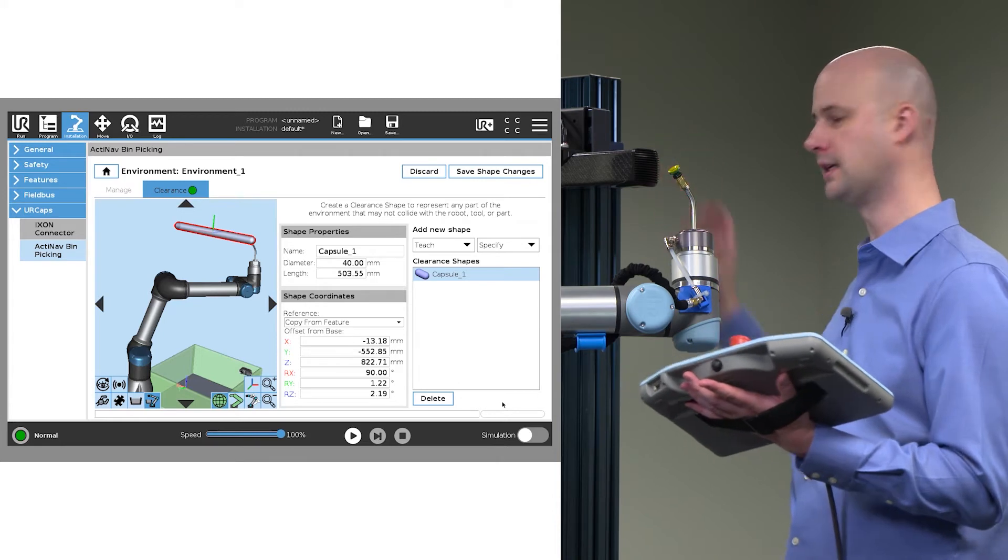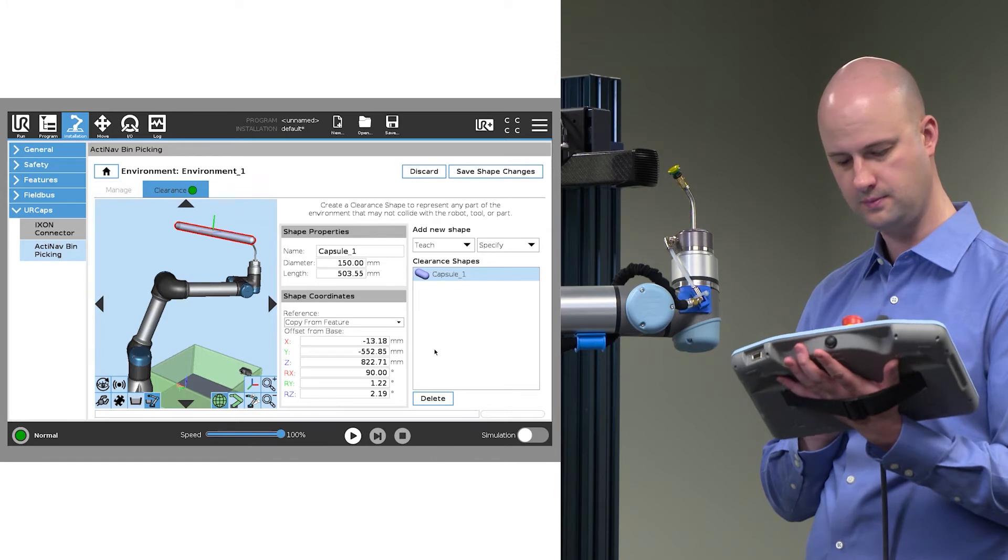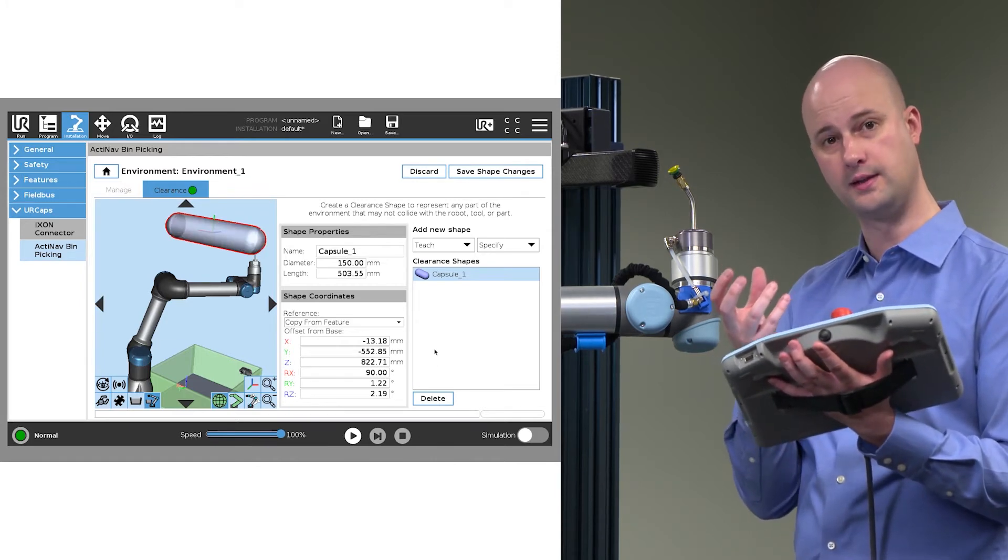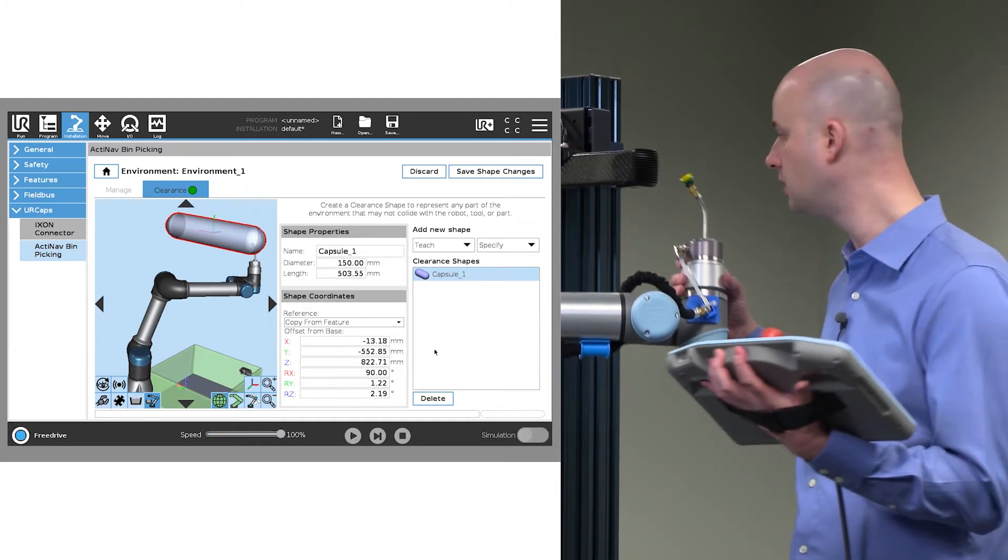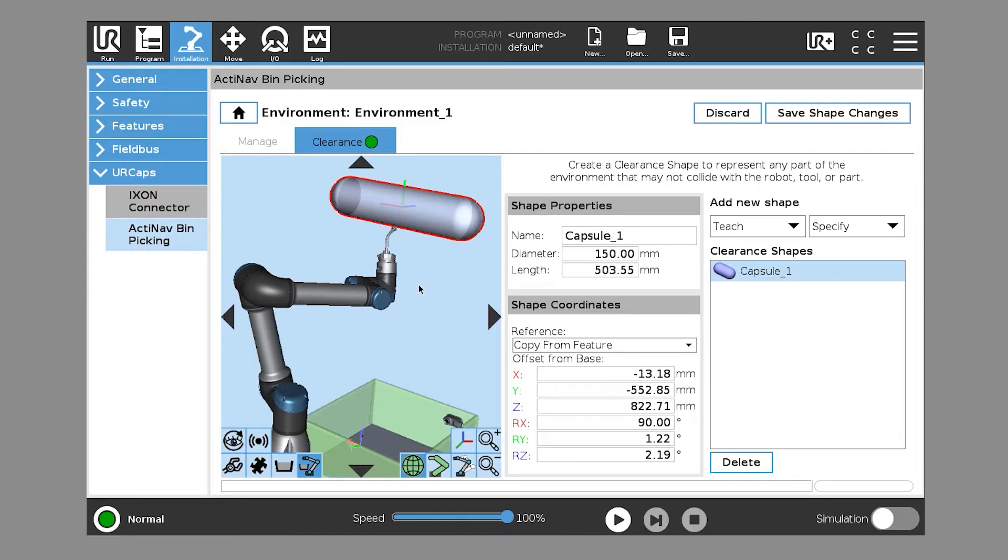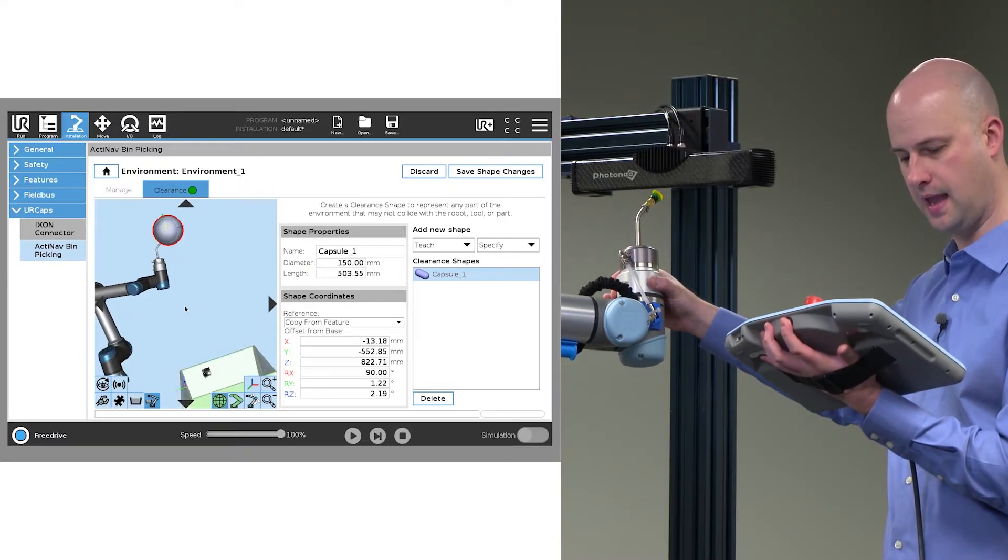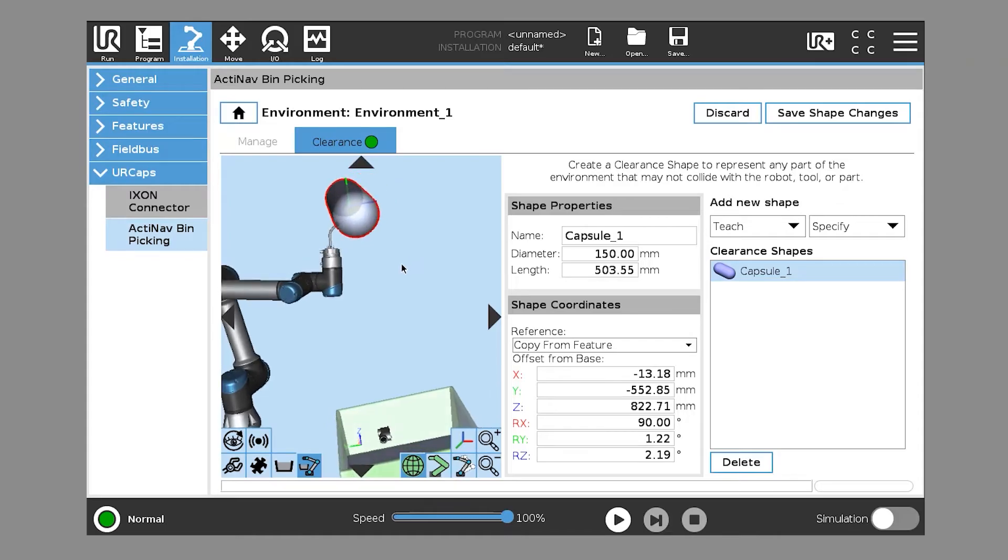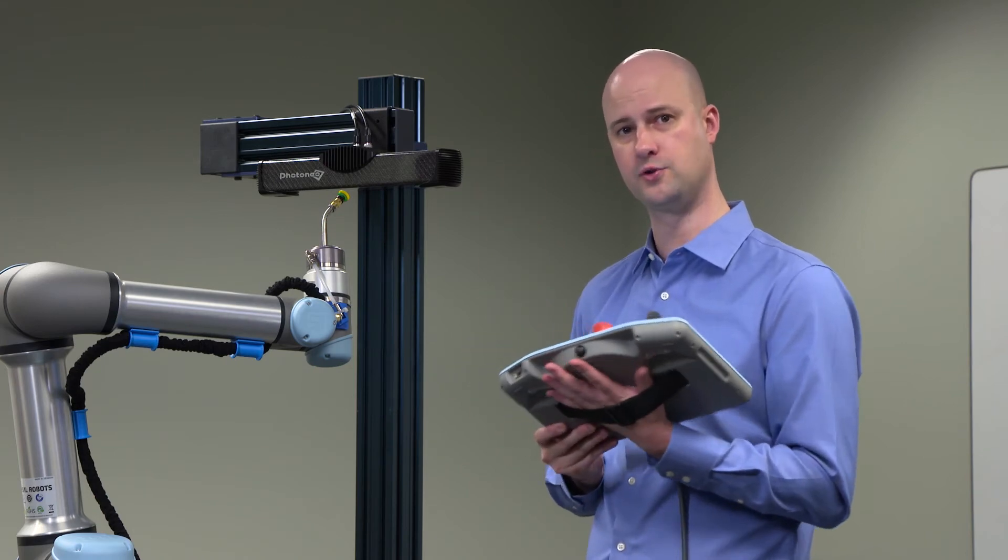Let's go with about six inches, maybe 150 millimeter diameter. And you can see we've now created this clearance shape around the sensor. To check our work, we can move the end effector in the space and we can look at the rendering on the teach pendant. And we can see just how close we're allowing the system to get. The end effector and the robot will not get any closer to the sensor than this based on the clearance shape that we've trained.